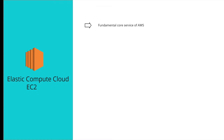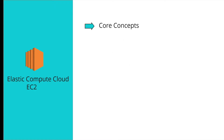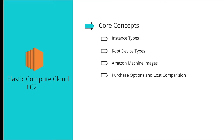EC2 is the fundamental core service of AWS and it's an infrastructure as a service. EC2 is a web service that provides resizable compute capacity in the cloud. It gives you complete control over your computing resources and lets you run virtual machines in Amazon's proven computing environment. We'll cover EC2 concepts such as instance types, root device types, Amazon Machine Images, and purchase options with cost comparisons.